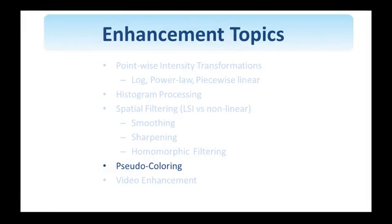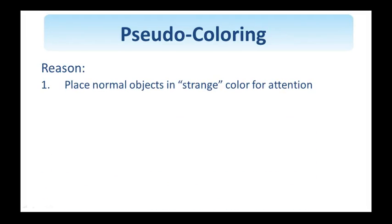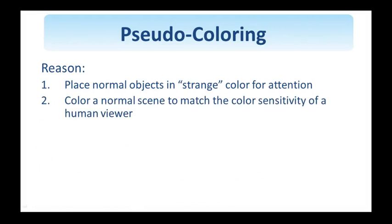Some of the motivations, along with examples of turning a grayscale image into a color image, are discussed next. Pseudo-coloring or false coloring is the enhancement technique of assigning color to grayscale values, done primarily for human visualization and interpretation of grayscale events. Some reasons include placing objects in strange colors for attention, since humans notice odd-colored objects more than others, and taking advantage of the color sensitivity of the human viewer. The luminance response of rods and cones in the retina peaks in the green region of the visible spectrum, and we want to account for that.